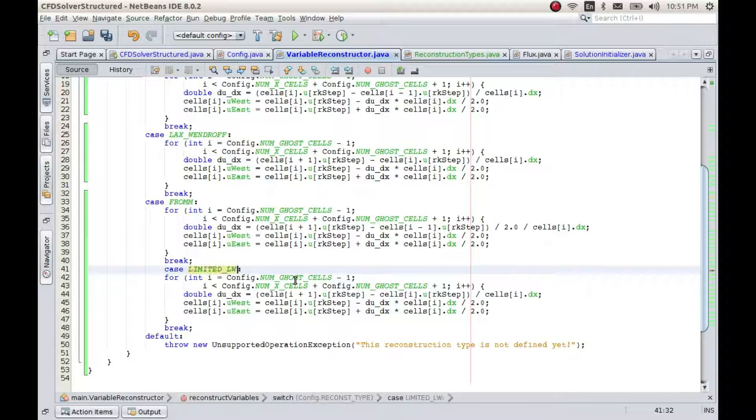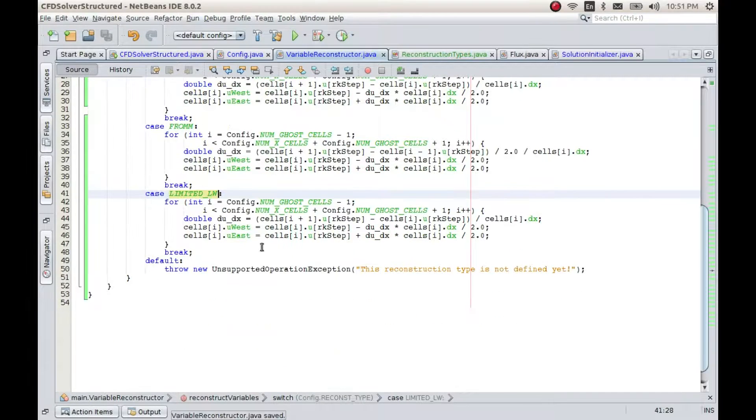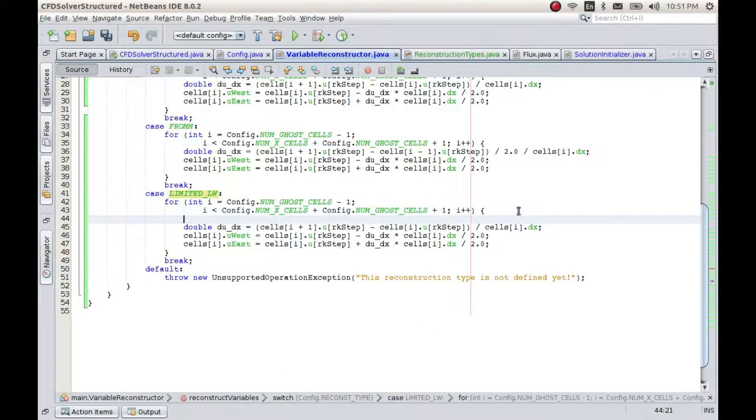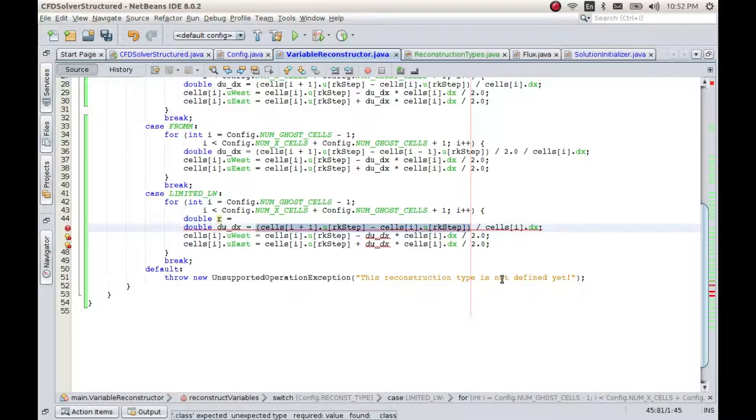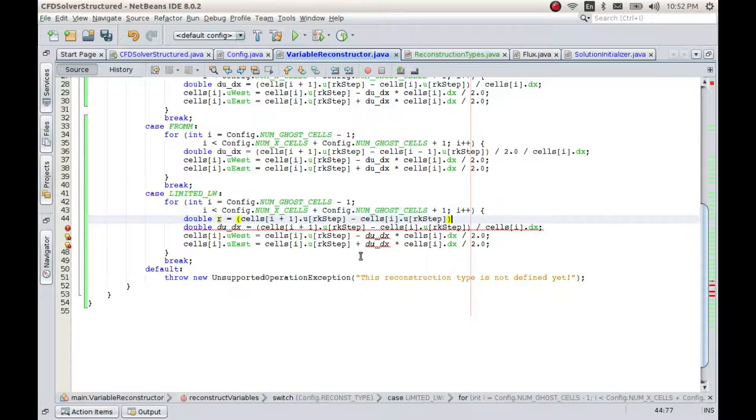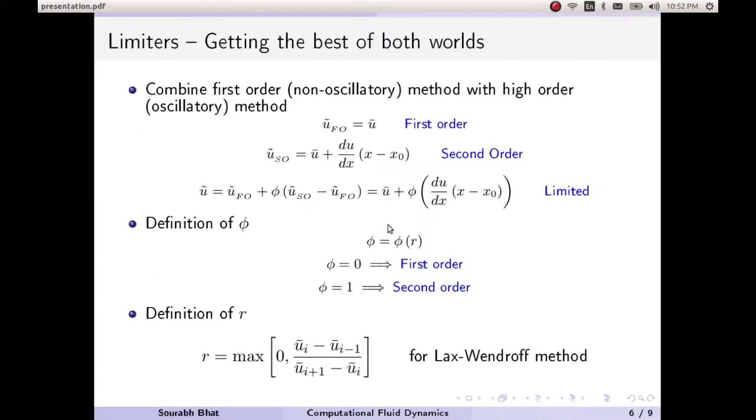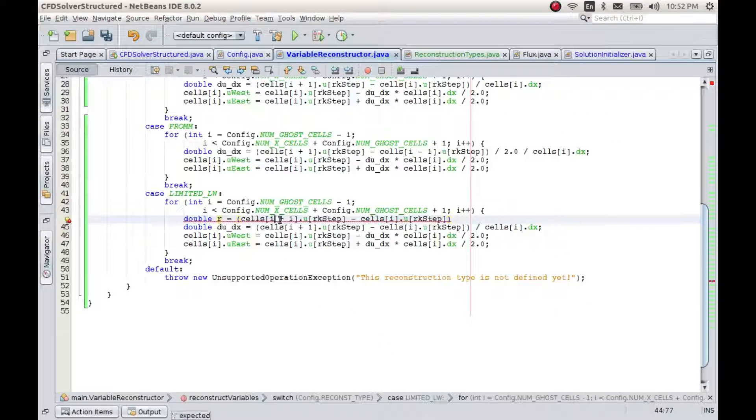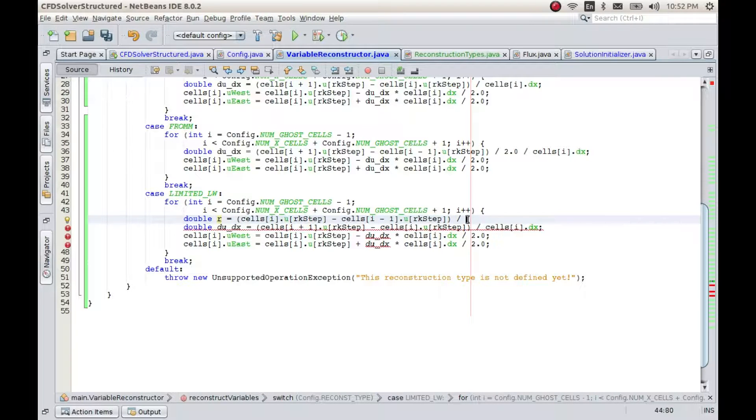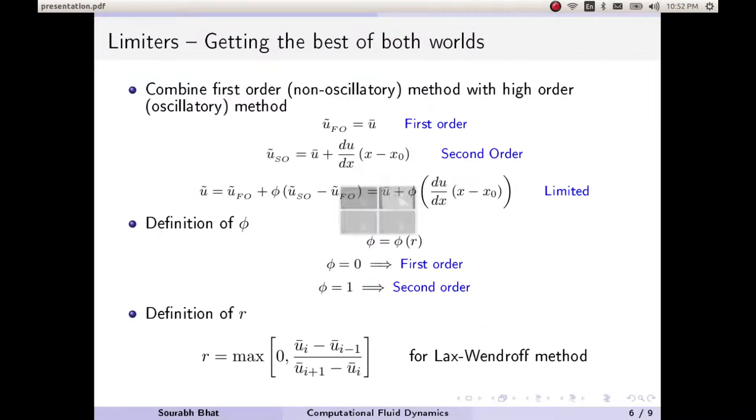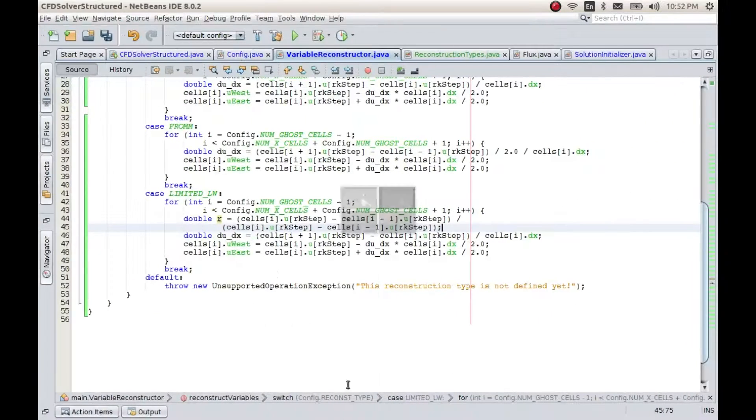Now we have to define r, which is given by u_i minus u_{i-1} in the numerator, and in the denominator we have u_{i+1} minus u_i. I suppose that is right.